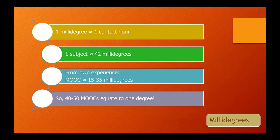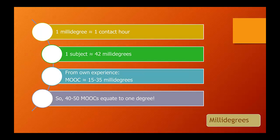During the talk I mentioned, I came up with the new unit millidegree, simply one-thousandth of a degree. I worked out that at my institution to get a three-year degree, students would need 24 units and about 40 contact hours roughly per unit. That means a single subject is worth 42 millidegrees.